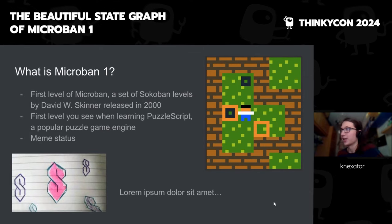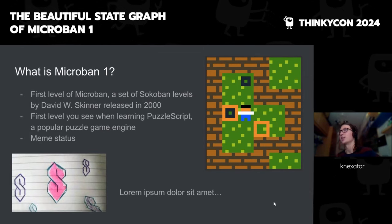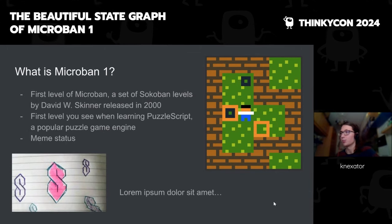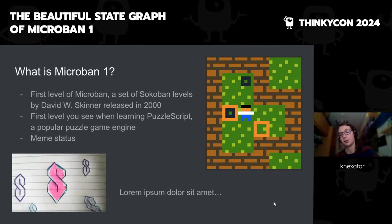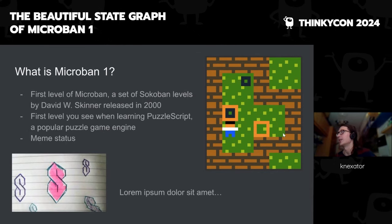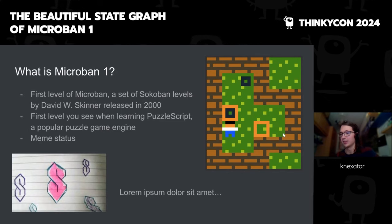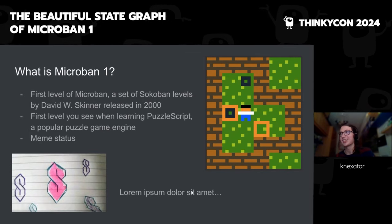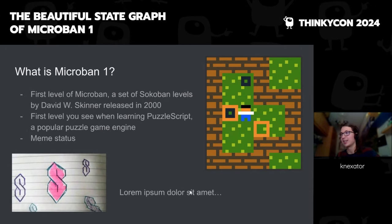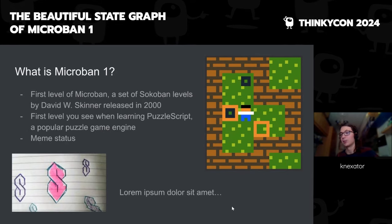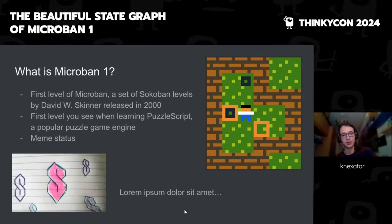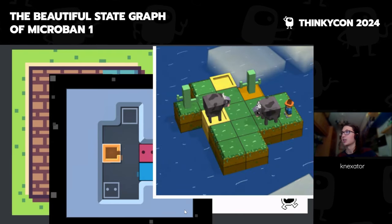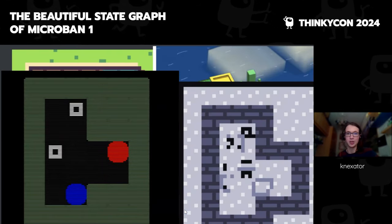Why has this one in particular got so famous? My theory is that it's because of PuzzleScript. PuzzleScript is a hugely influential thing in the thinking community; it's an engine for quickly making grid-based games like Sokoban. The default level of the default example project for PuzzleScript is Microban 1, which means that a lot of people have seen it, giving it kind of a meme status — just like the Lorem Ipsum text used as a placeholder in webpages. It's a tradition, if you are making a thinking puzzle game with crates and walls and targets, to include a reference to Microban 1 in your game.